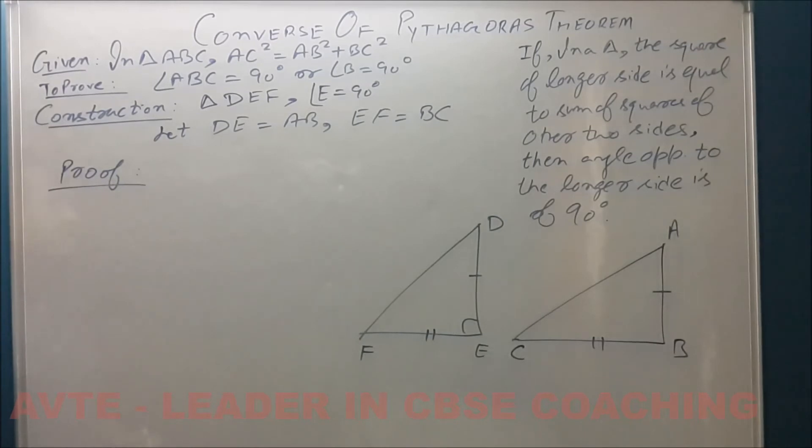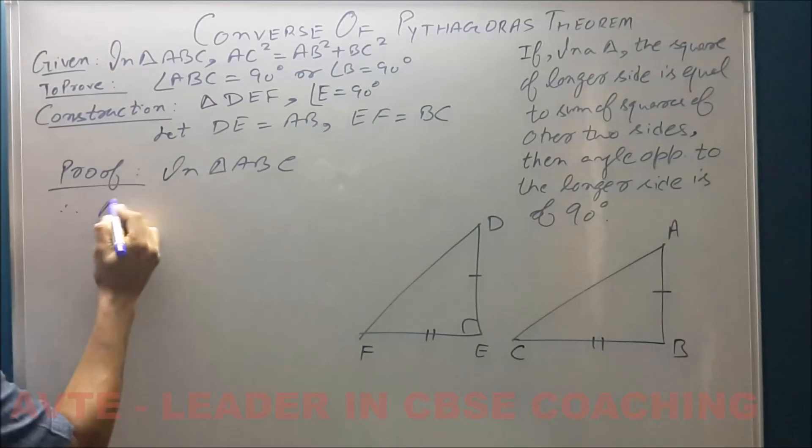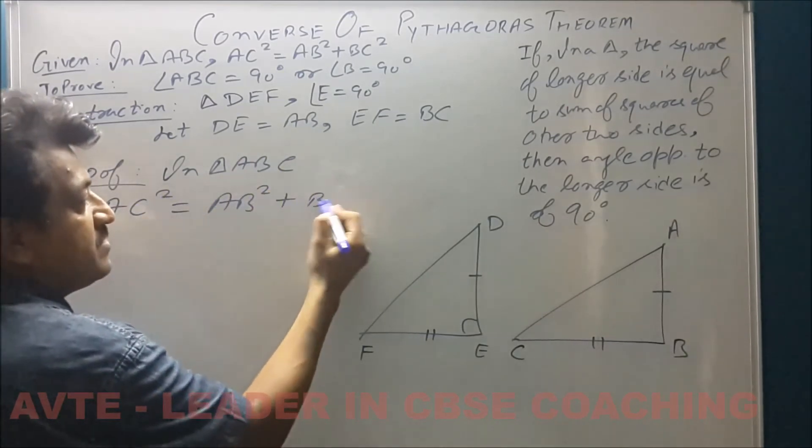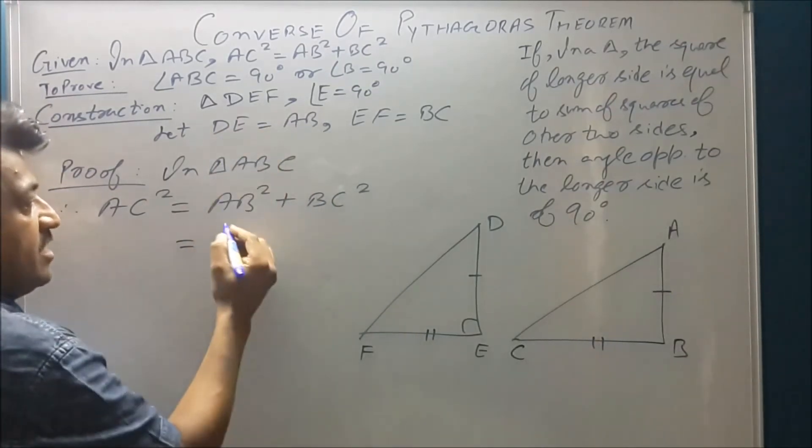In triangle ABC, in which we have given that AC square is equal to AB square plus BC square, now we convert AB to DE.